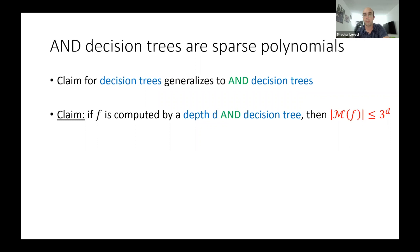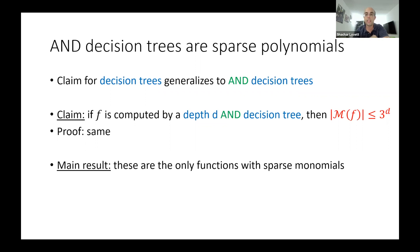Now here's where the fun begins: are AND-decision trees the only examples of sparse boolean functions, or is there a richer family? What we're going to show — with some quantitative losses — is that the only boolean functions with few monomials are computed by AND-decision trees. Crucially, depth d gives exponentially many monomials in d, so if a boolean function has m monomials, you should need something like log m depth. Getting this quantitative bound tight is important; the qualitative statement is easy to show.